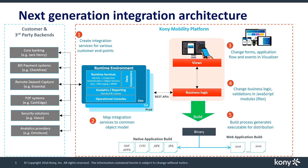These services then need to be mapped with the common data model from within Mobile Fabric. Depending on the functional extension the bank needs, the project team could also customize the data model or add specific pre and post processor logic. Once this is done and tested against the bank's back-end systems, the Mobile Fabric app is published and connected to the front-end application.